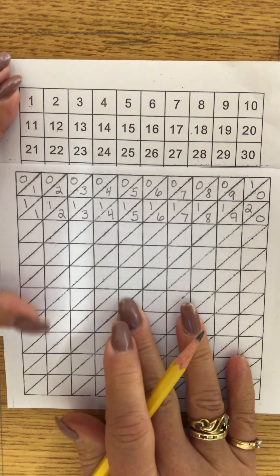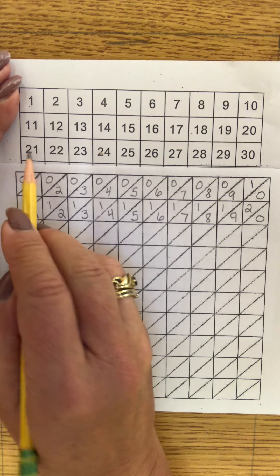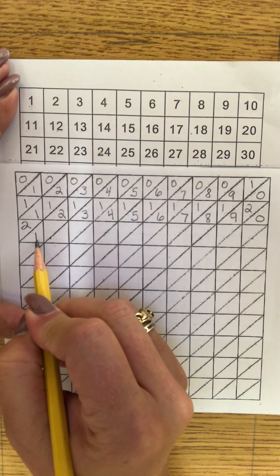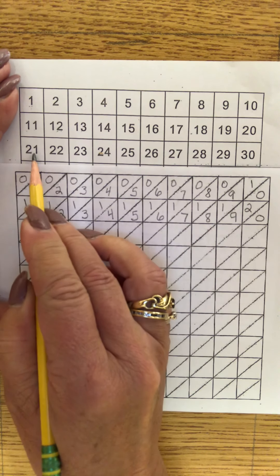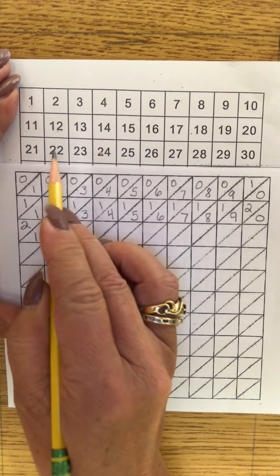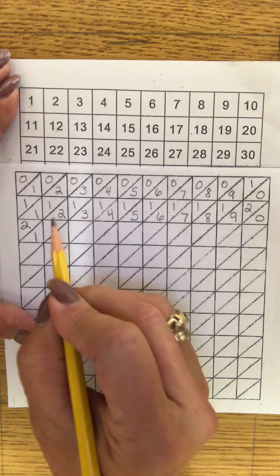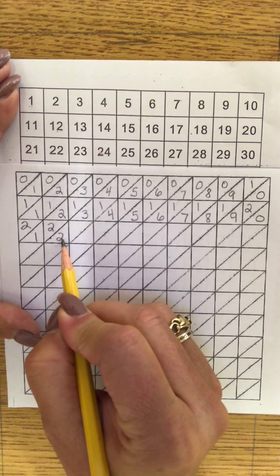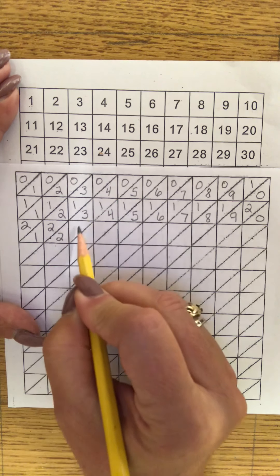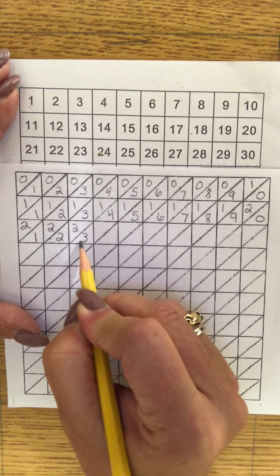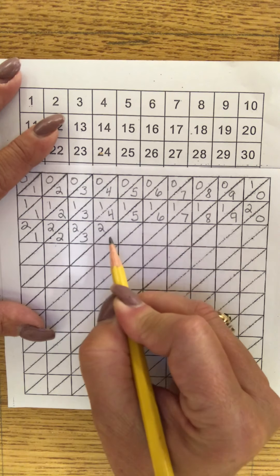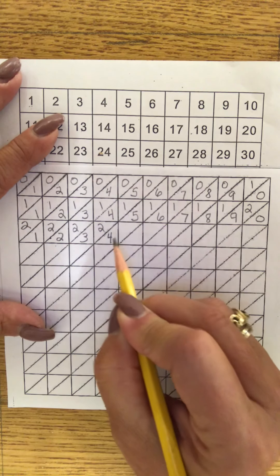Next row, 21. Two tens, which is 20, plus 1, 21. Two tens plus two ones. Two tens, two ones, 22. Two tens, three ones, 23. Two tens, four ones, 24.